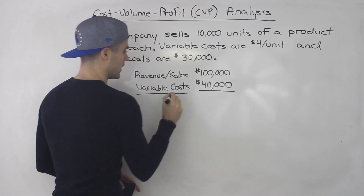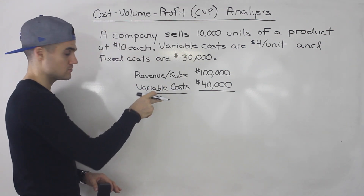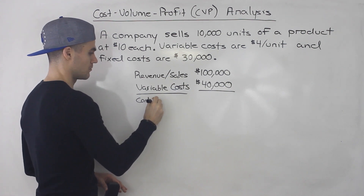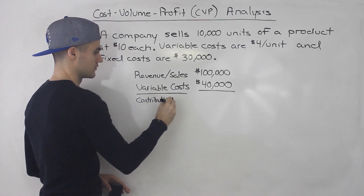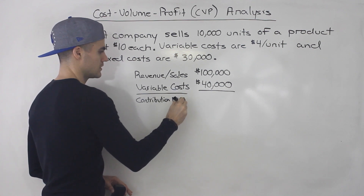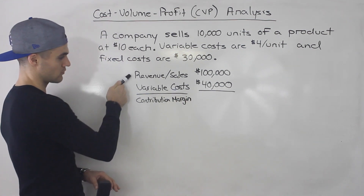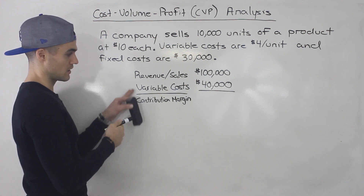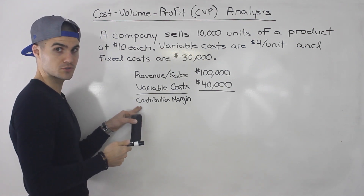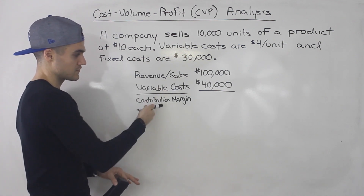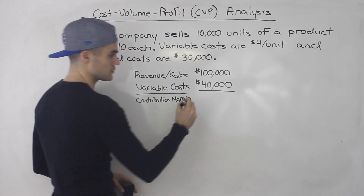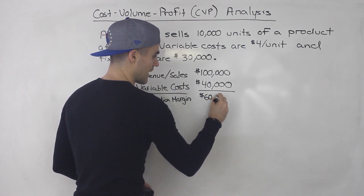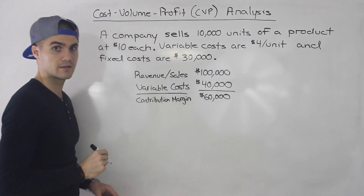When you subtract those two figures, you're going to get something called the contribution margin. In a regular income statement it's revenue minus cost of goods sold equals gross profit, but in this case we have variable costs and contribution margin instead. So: revenue or sales minus variable costs equals contribution margin. You're going to see that term come up a lot in this section.